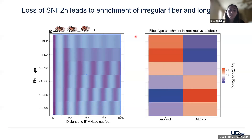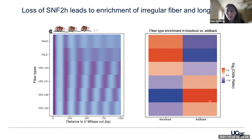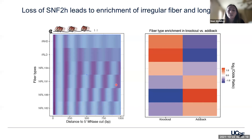We next wanted to see if the usage of these fiber types changes in the SNF2H knockout context. In the knockout setting, there's a clear enrichment for irregular and long NRLs and depletion for regular NRLs. While in the SNF2H re-expression line, you get depletion of long NRLs and irregular types and enrichment of shorter regular NRL fibers. Overall, studying these single molecule fibers has allowed us to speculate further about SNF2H and its role in vivo, and we're currently doing more analyses to determine how SNF2H acts in these different contexts.